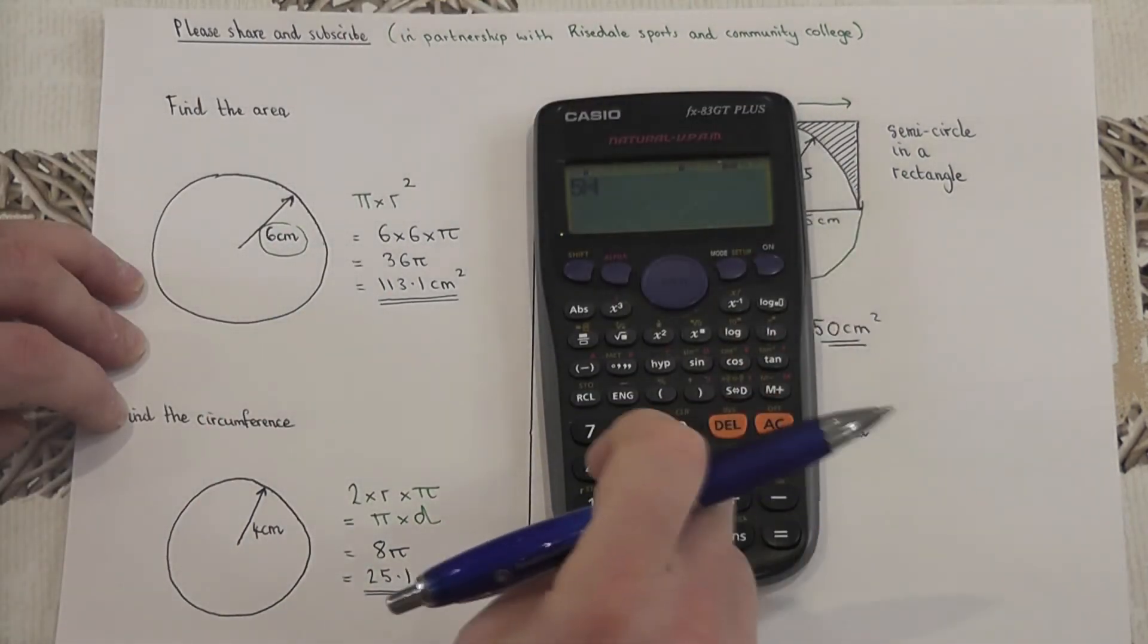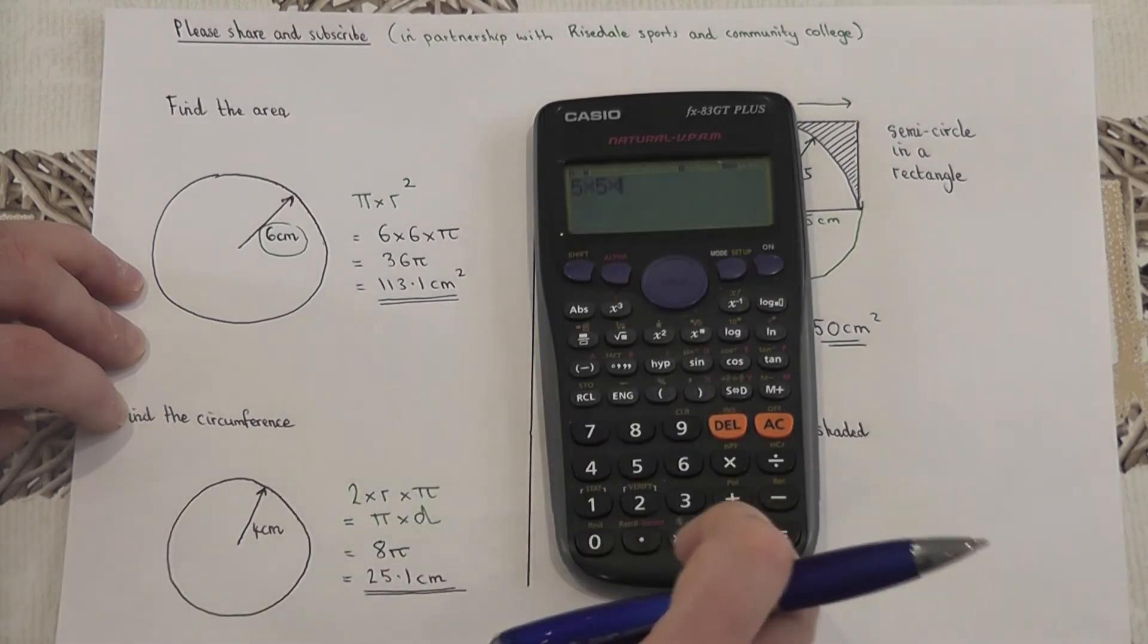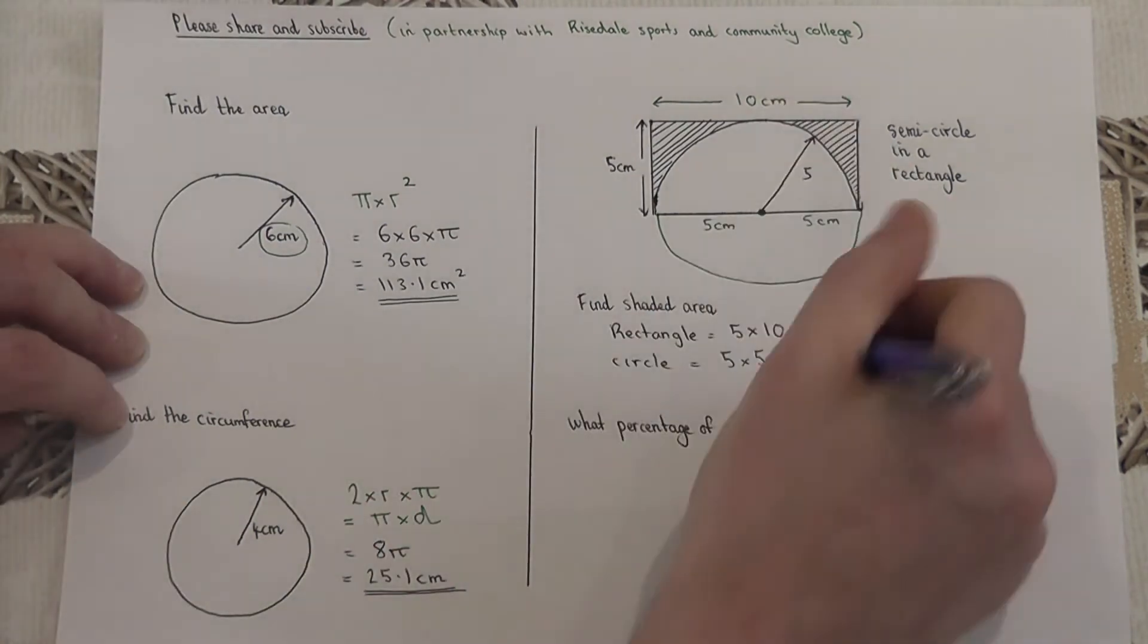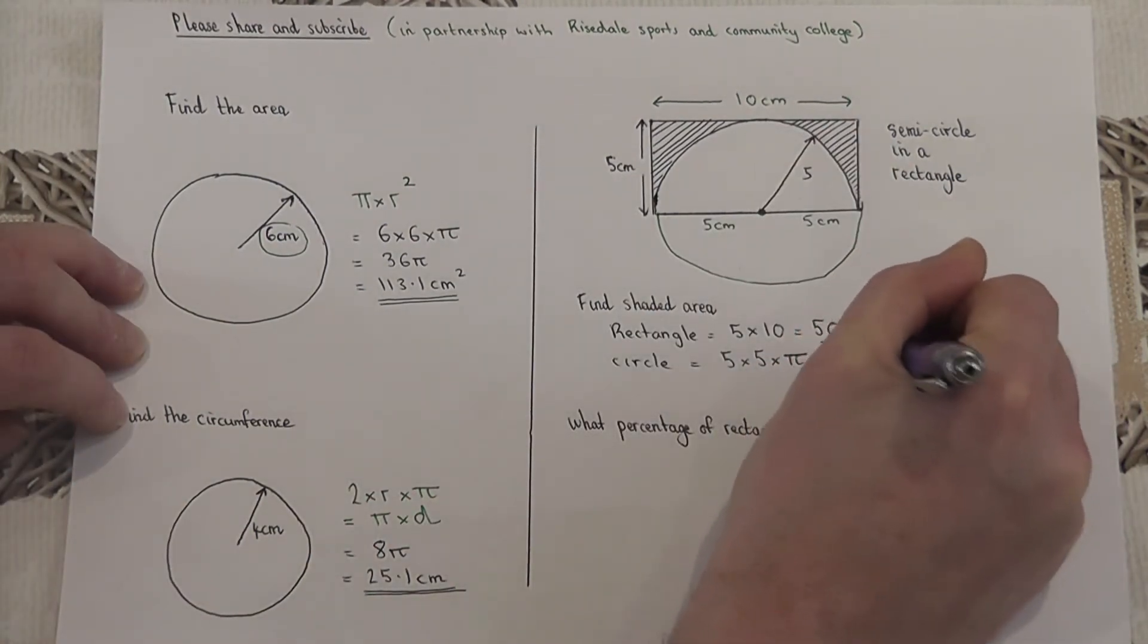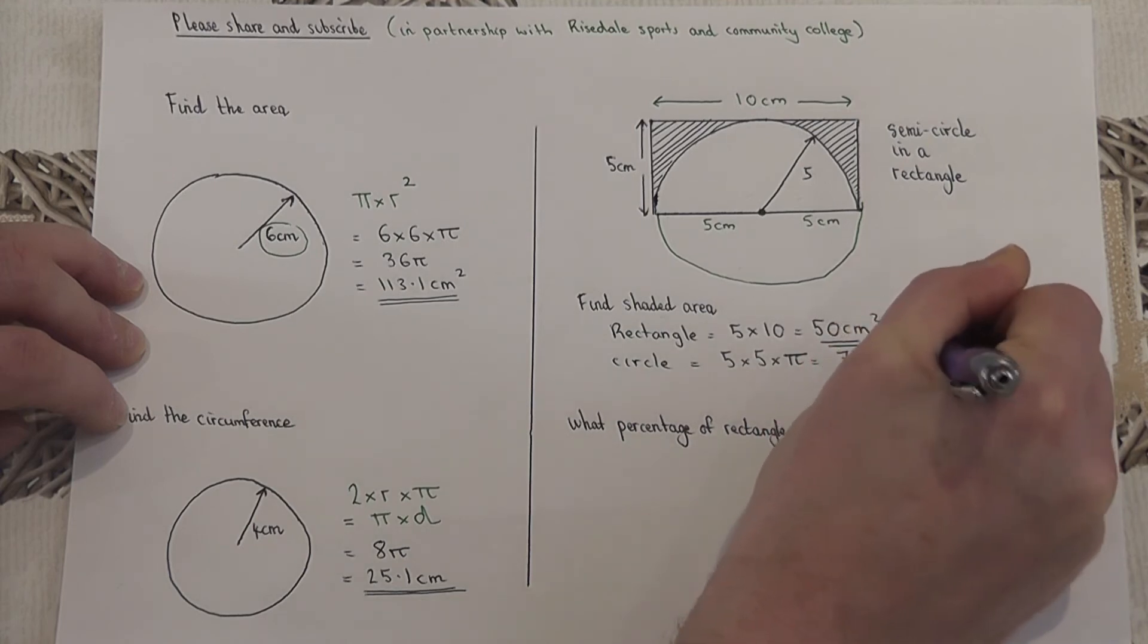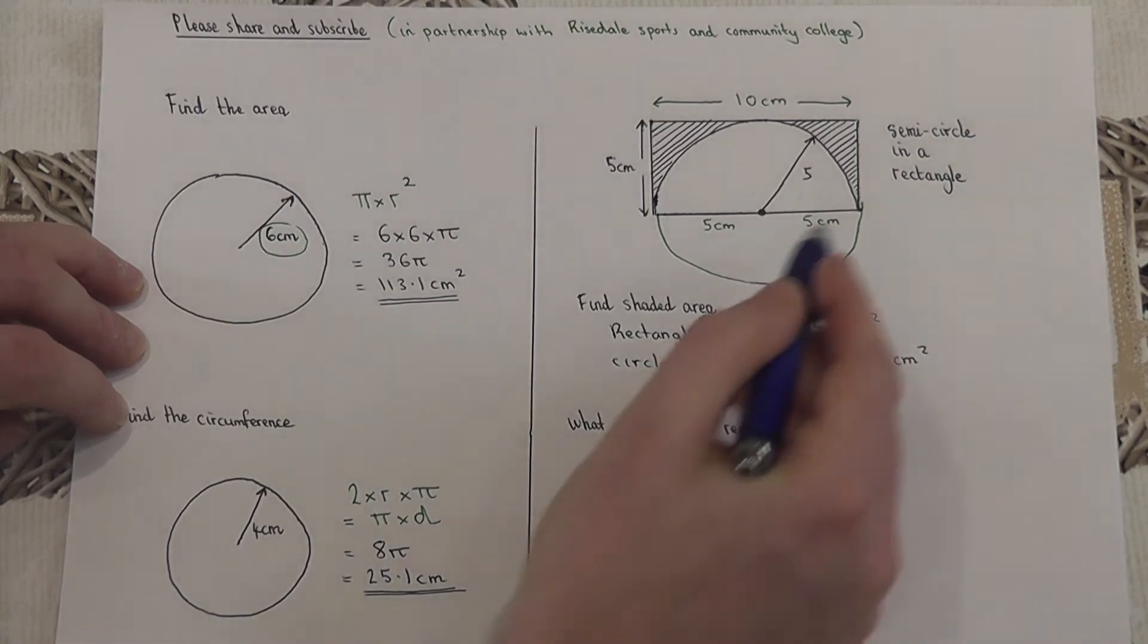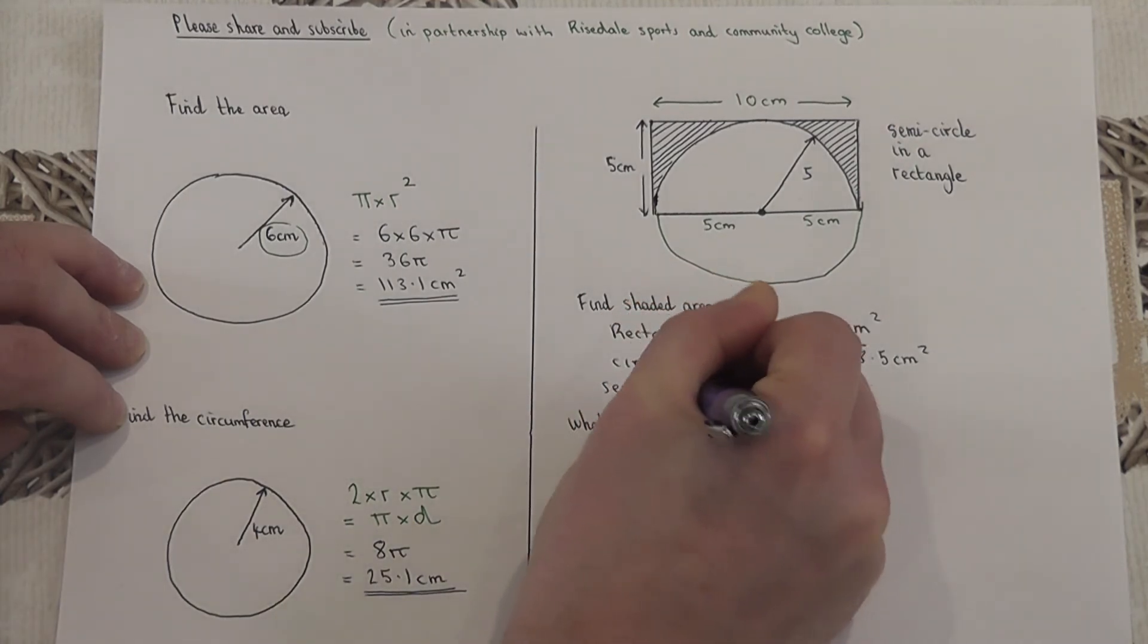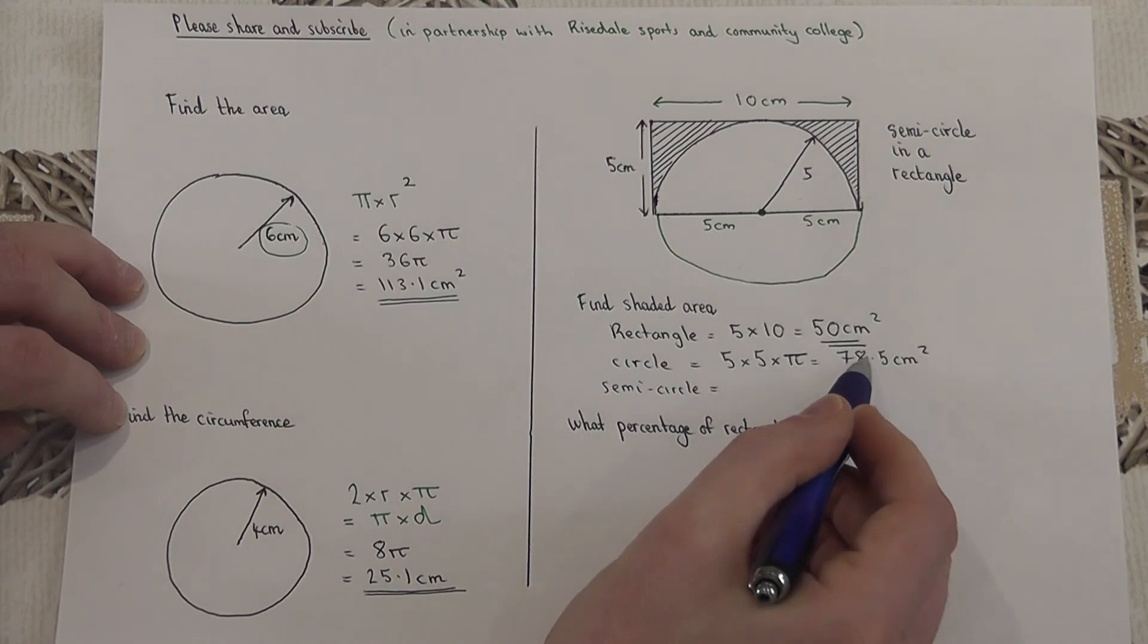So 5 squared times by pi equals 25π, or 78.5 centimeters squared. Now this is the entire circle, so the semicircle must just be half of this.